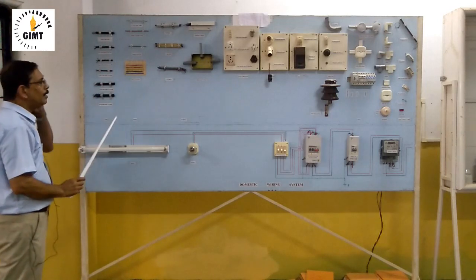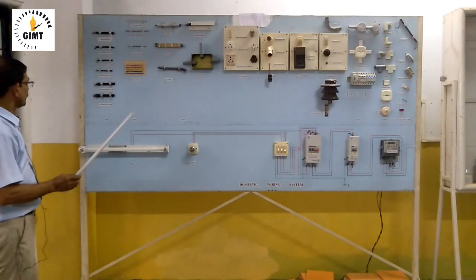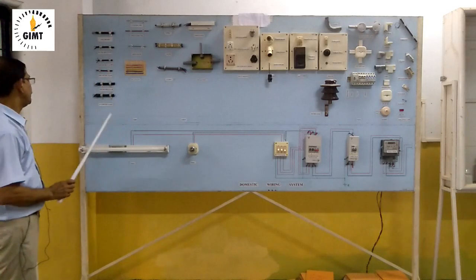Then copper earthing wire and this is GI earthing wire. Any one type of earthing wire we are using for earthing purposes. Various types of earthings are there, so we will be discussing that afterwards.